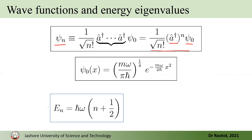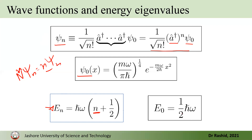The energy eigenvalue can be derived in terms of N, where N is the eigenvalue for the number operator. When the number operator acts on ψN, it gives N·ψN. For the ground state where N equals 0, the ground state energy would be (1/2)ℏω.